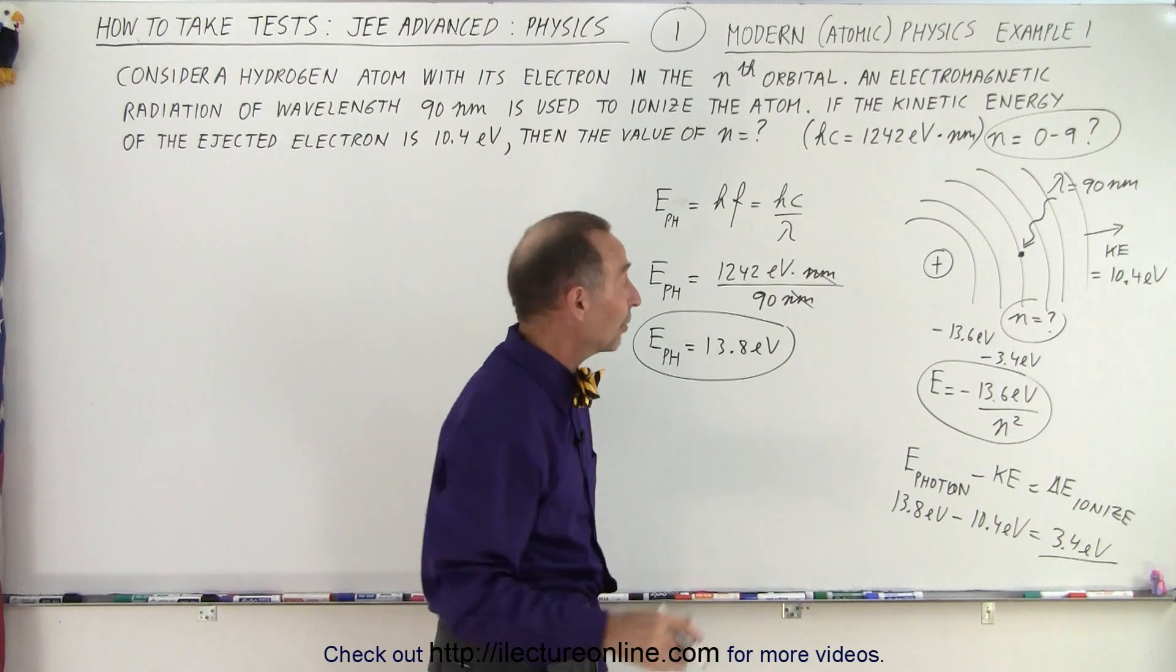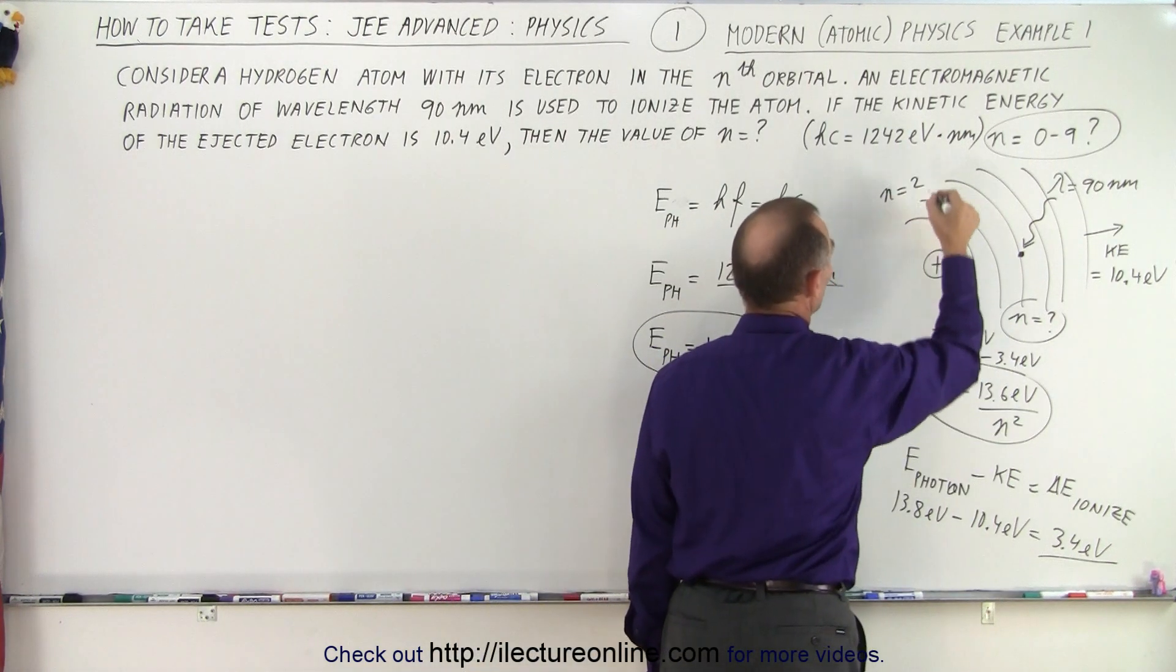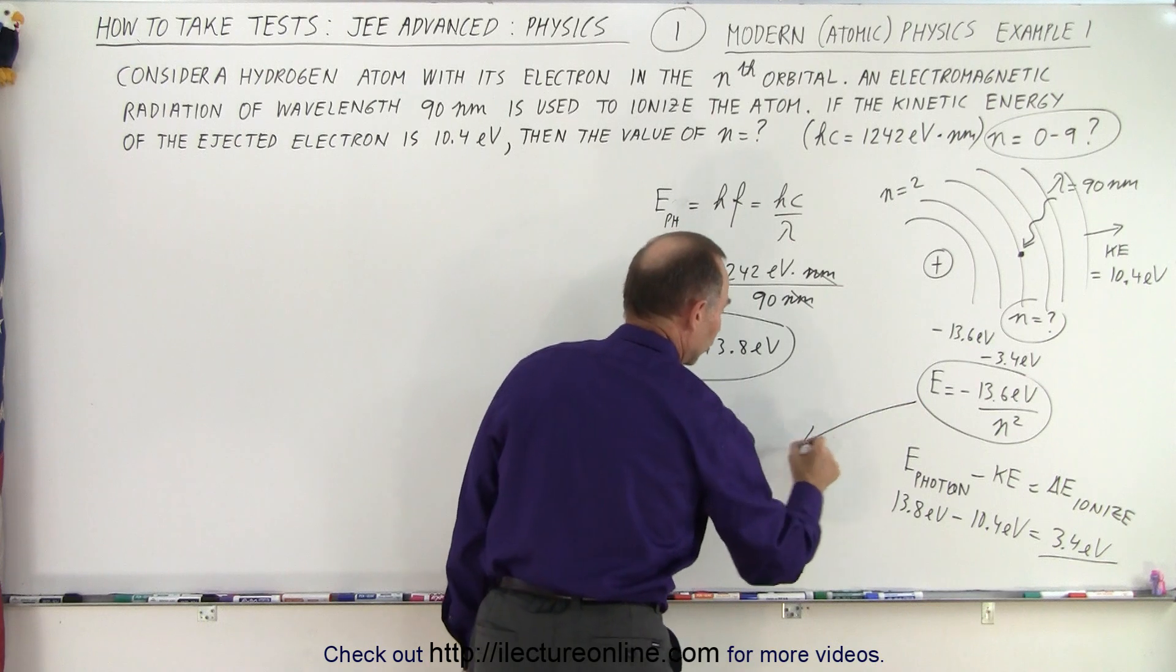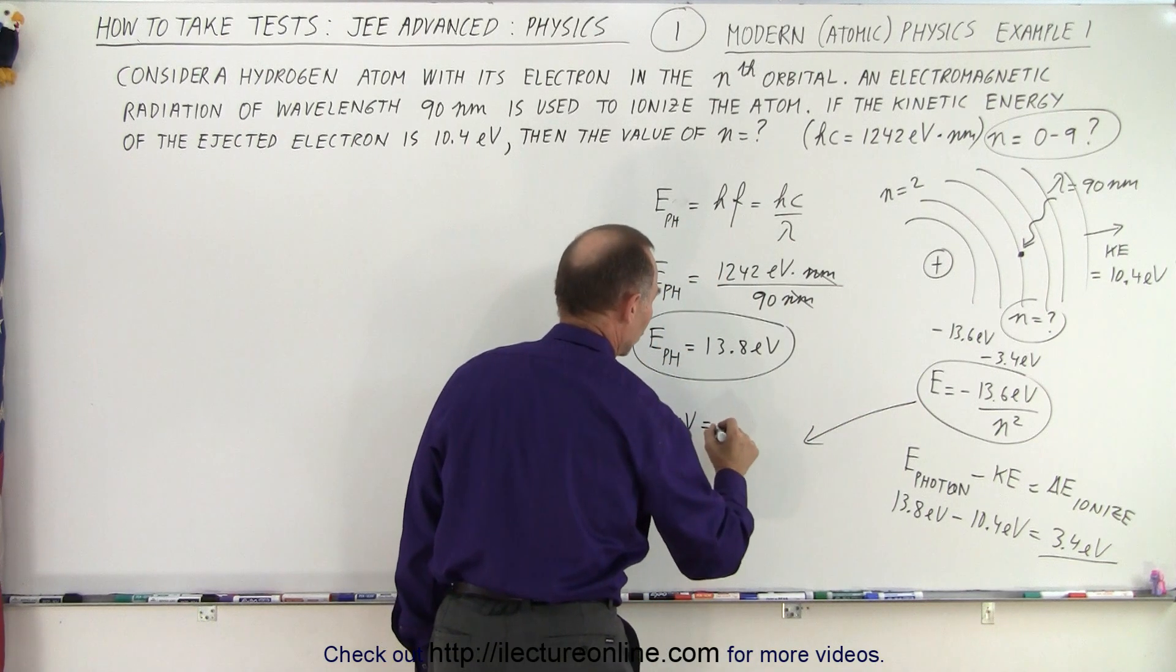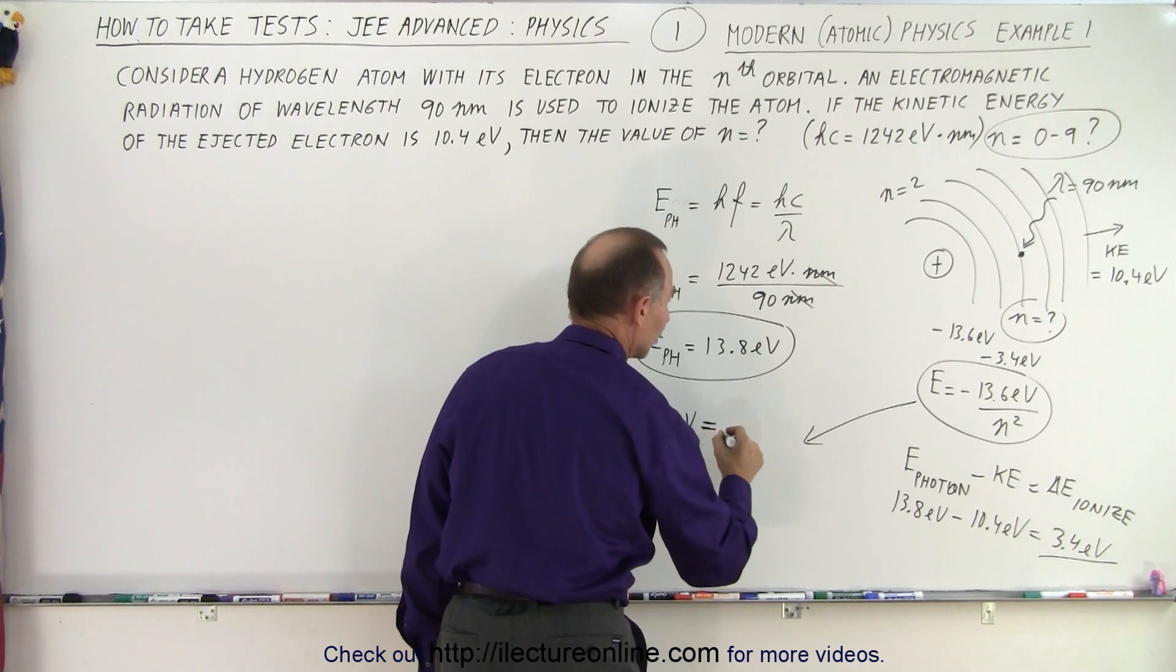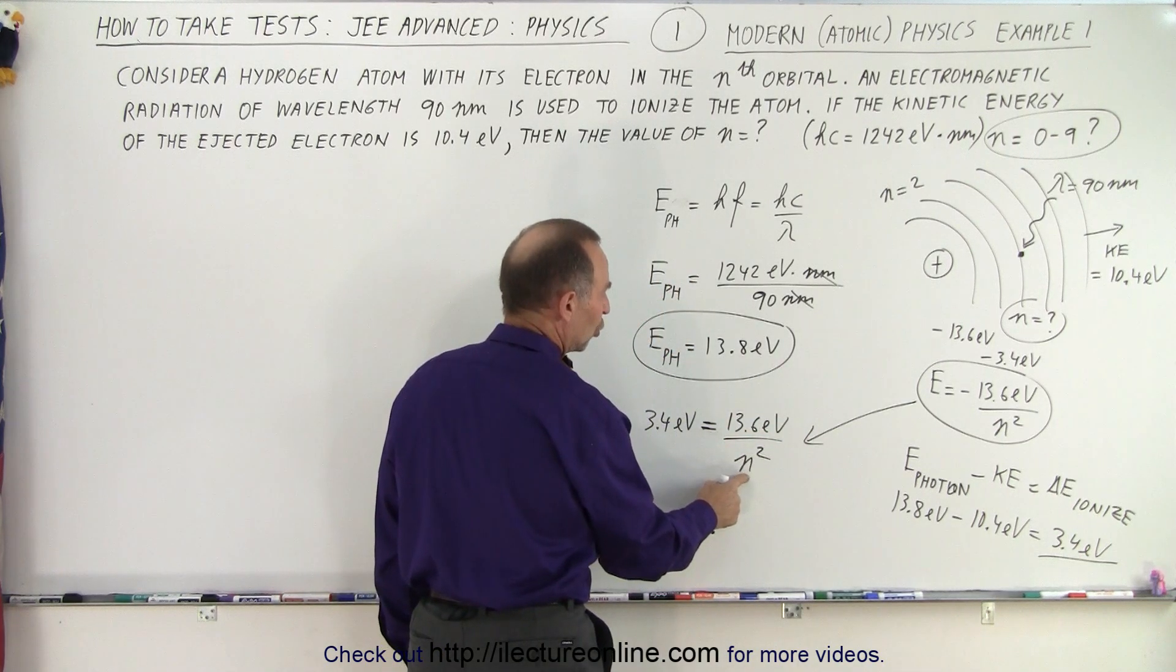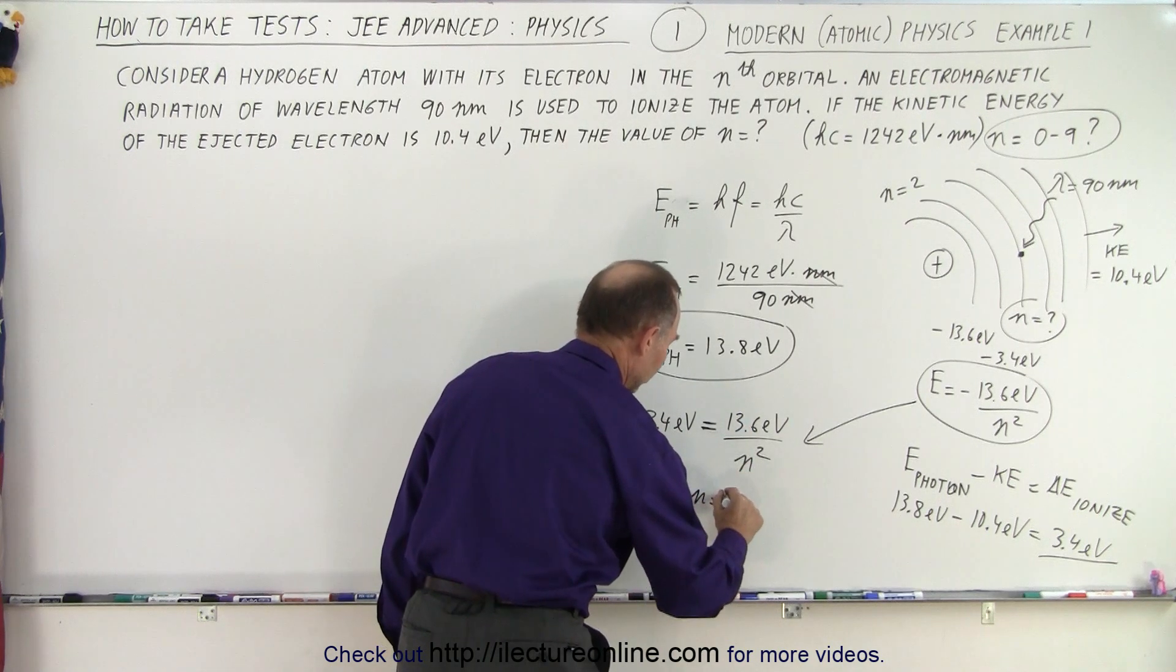Now you might immediately recognize that is the second orbit, so therefore n equals 2, or if you don't remember that, use the equation. You could say that the energy, 3.4 electron volts is equal to, and it doesn't matter if it's negative or positive, we just take the magnitude of the energy needed, 13.6 electron volts divided by n squared. So you can see that if n is 2, this divided by 4 gives you that, so therefore n is equal to 2.